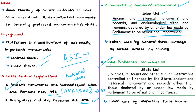Apart from the monuments of national importance, there is a list of state protected monuments under the Archaeological Survey of India. These monuments are protected by state governments and looked after by the concerned department of archaeology of the respective state governments, as per the State List of the 7th Schedule. Monuments of national importance that are declared by Parliament as such are taken care of by the central government through the ASI.